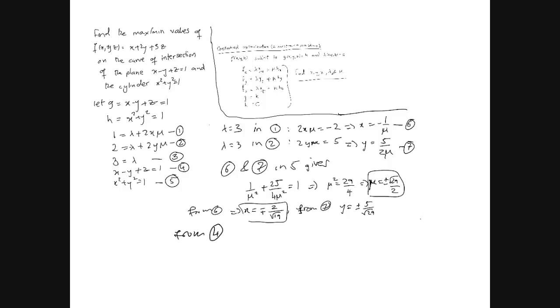Subbing in this x, this y, and let's not forget lambda equals 3 here. From equation 4, subbing in the values of x and y, we see that z turns out to be, it's going to be 1, that's going to give you plus minus 2 over root 29 minus 5 over root 29.